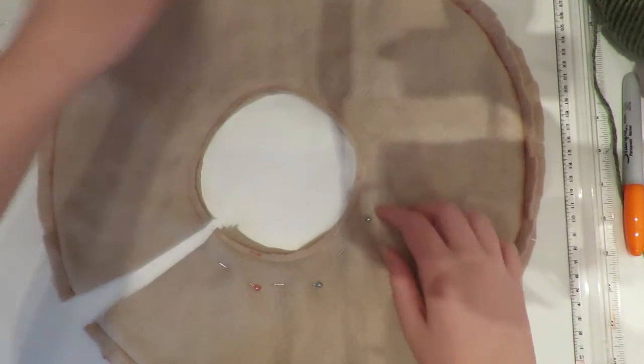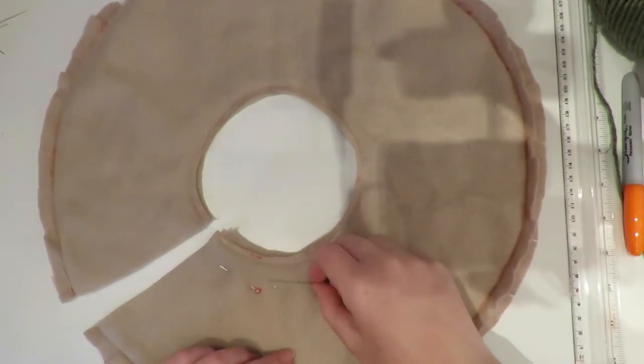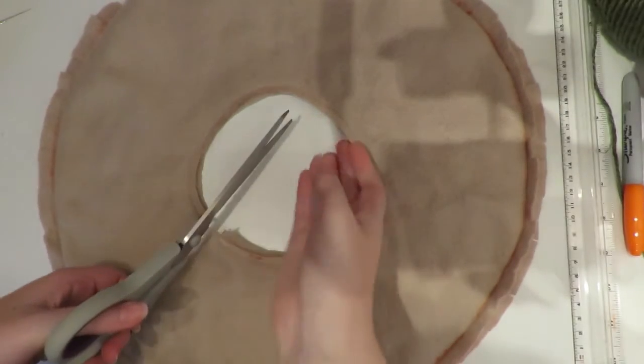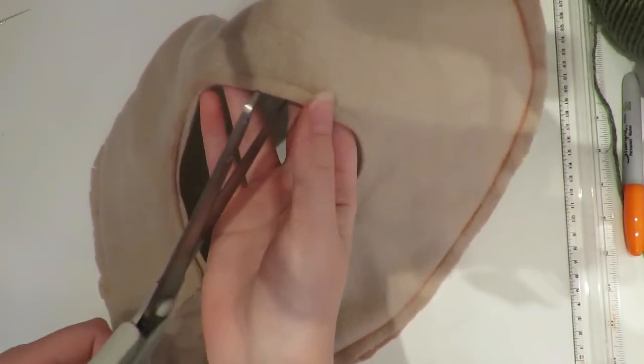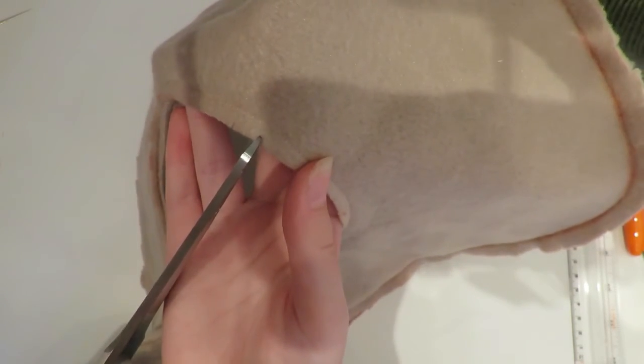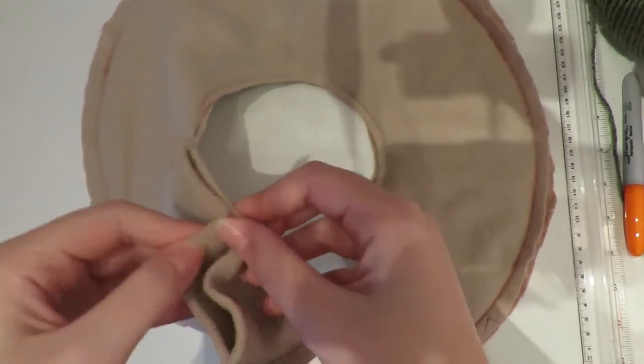We're going to clip all the way around the inside, but be very, very careful not to cut through your stitching or your gluing because you will land up with a hole and that is not good at all. You don't want to do that. So be very careful. As you can see, I've taken tiny little snips.